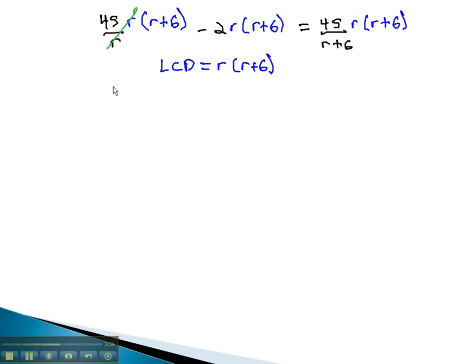This allows us to reduce the r's to get 45 times r plus 6, minus 2r times r plus 6. And with the r plus 6's dividing out, we get 45r.